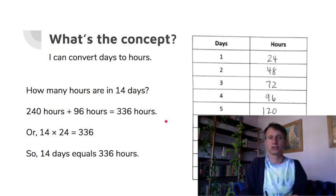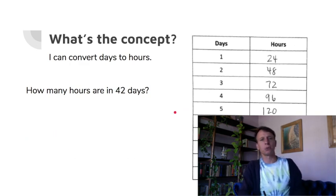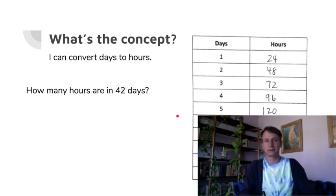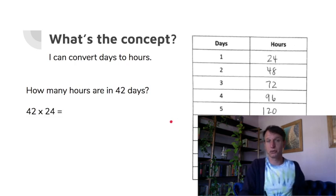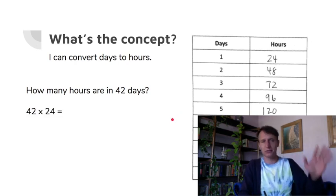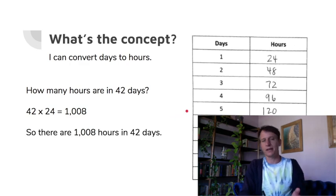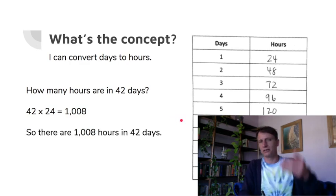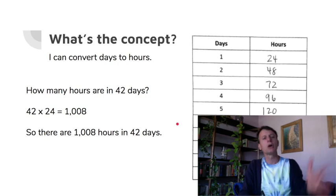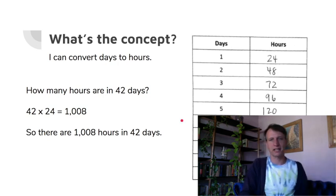All right, how about 42 days? Well, you're setting up 42 times 24, which again I'm not going through all the ins and outs here—it's 1008. There are 1008 hours in 42 days. Point being, the lesson being: multiply by the conversion factor, in this case 24 hours per day.